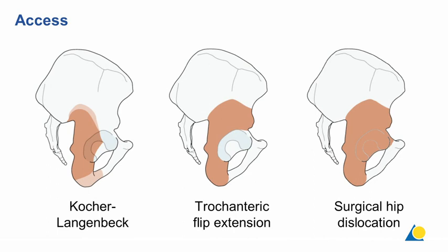The area of access with the Kocher-Langenbeck approach is the retroacetabular area, portions of the ilium and ischium, and you can reach the quadrilateral surface digitally with your finger. With a trochanteric flip extension you can reach higher up on the ilium to the inferior iliac spine. With a full surgical hip dislocation you can enter the entire hip joint and have visual control over the entire acetabulum, femoral head, and portions of the anterior column.